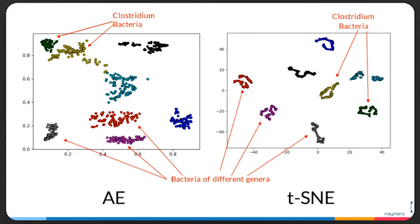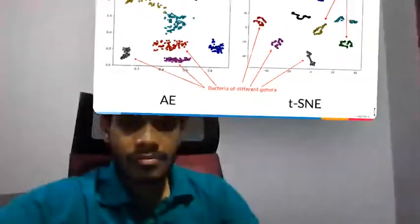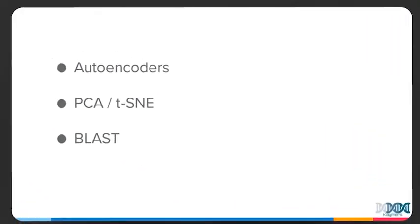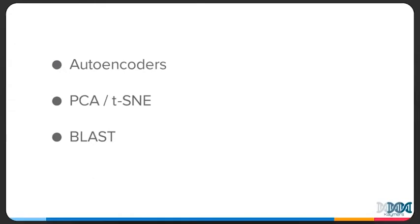It is these findings that motivated us to build Metagy. Metagy is a tool that can analyze metagenomic data and produce visualizations. Currently Metagy has three techniques to analyze metagenomic data: analysis based on autoencoders, PCA and t-SNE, and the popular tool BLAST.